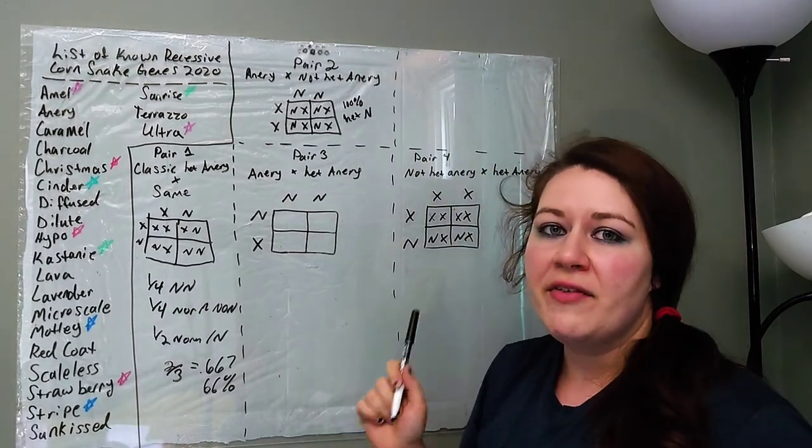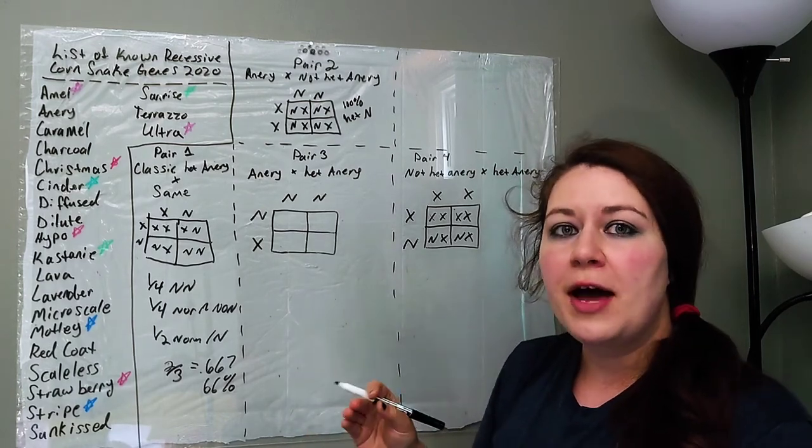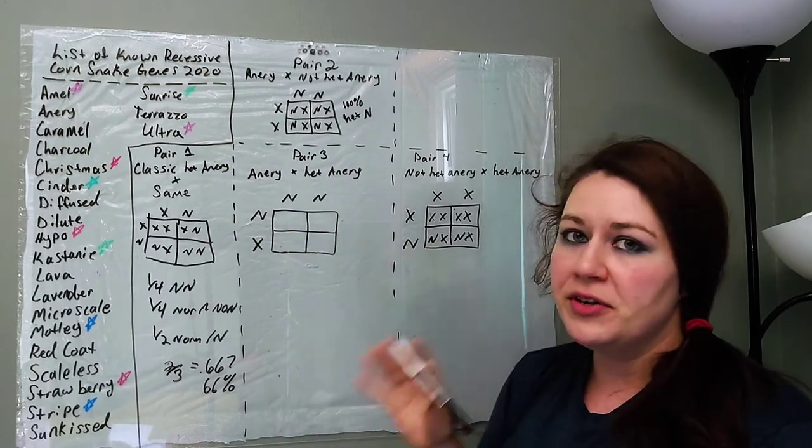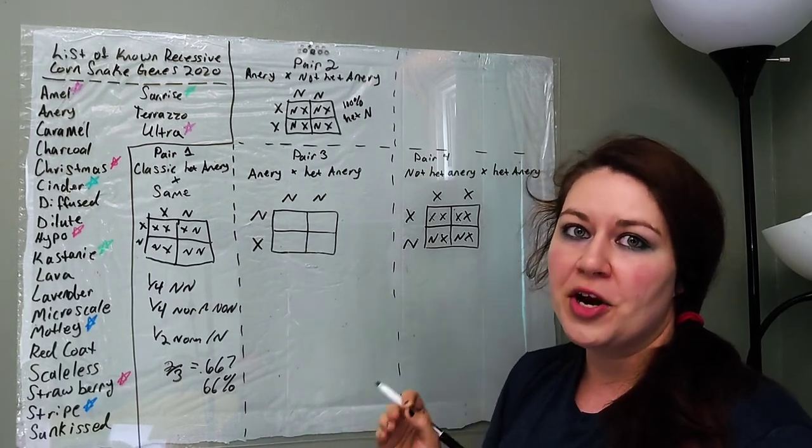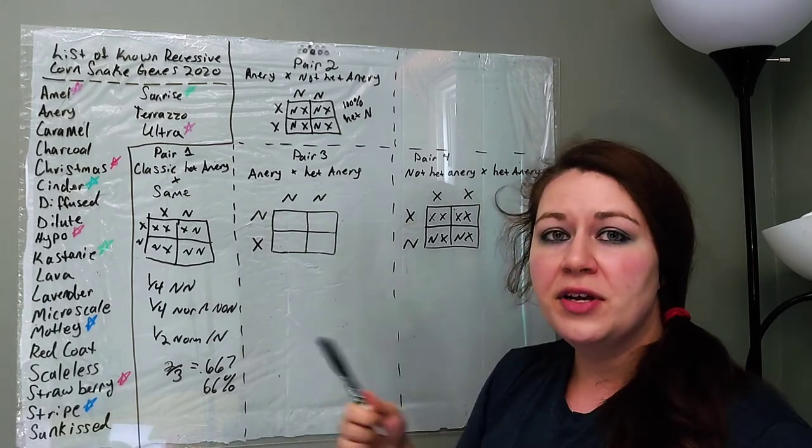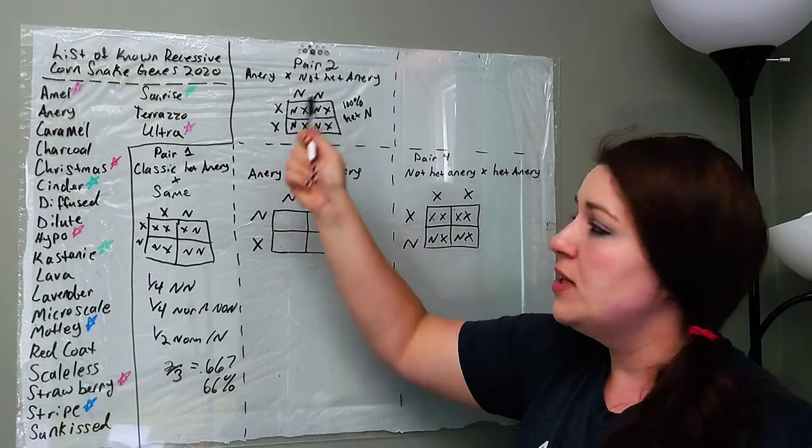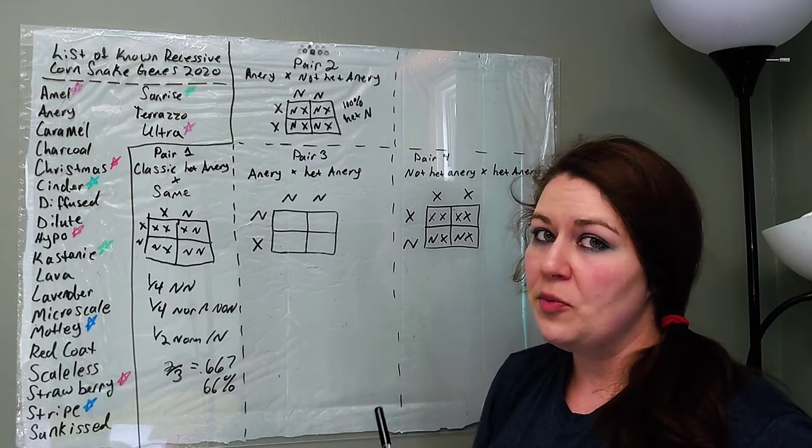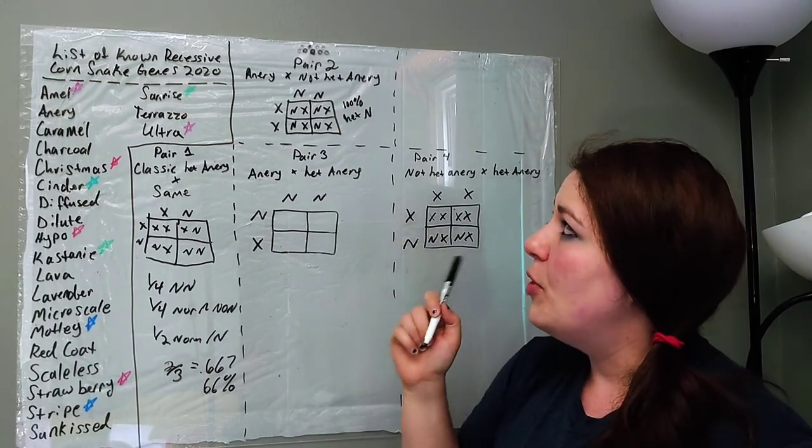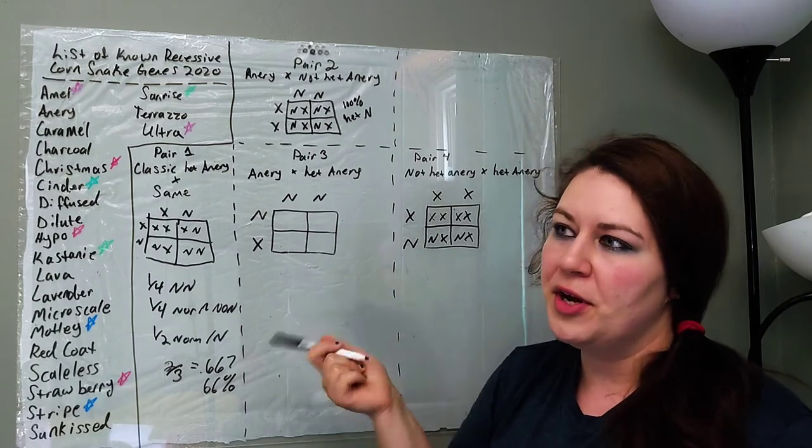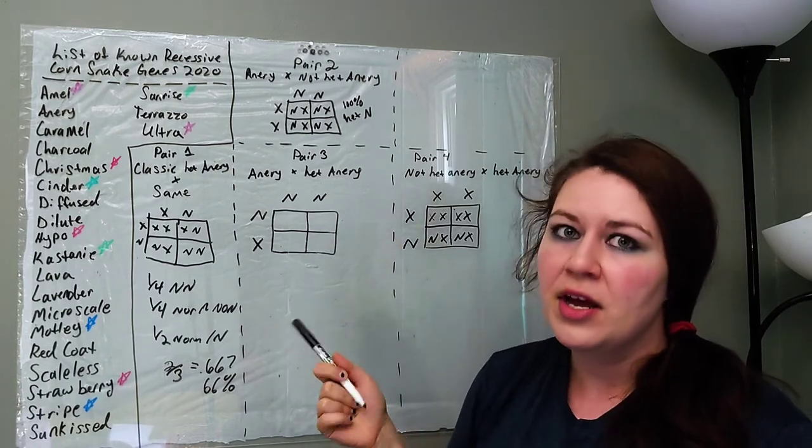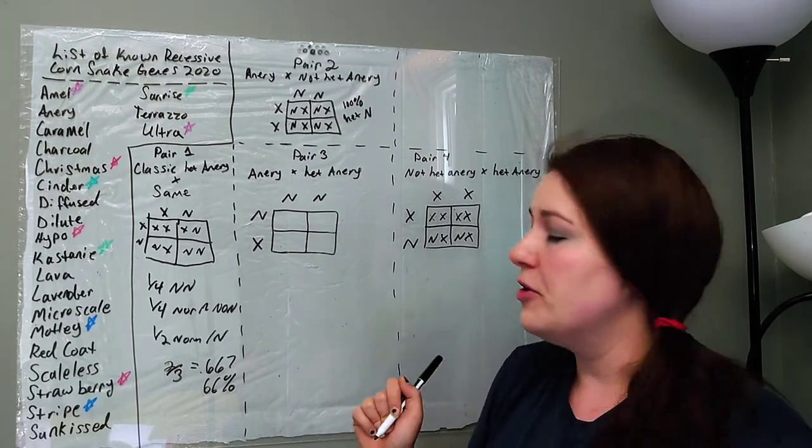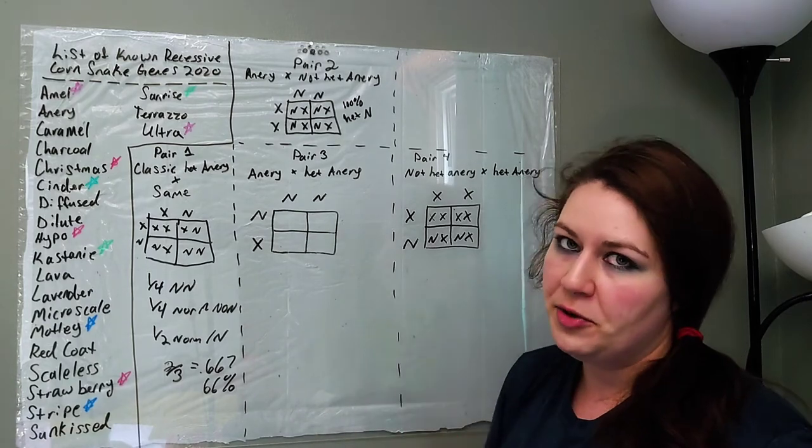So, when someone says that they have a snake that is 100% het for something, that means that one of the parents was homozygous for that gene. That definitely had the gene on both of their sets of DNA. So, if you say anery, 100% het anery, it just means that one parent was definitely an anery, the other one maybe wasn't, but one parent definitely was. And this can mean that both parents, it couldn't mean that both parents were anery, but it could mean that one was an anery and one was a het anery, or one was an anery and one just was not an anery at all. But if one parent was an anery, all the offspring will be het anery.